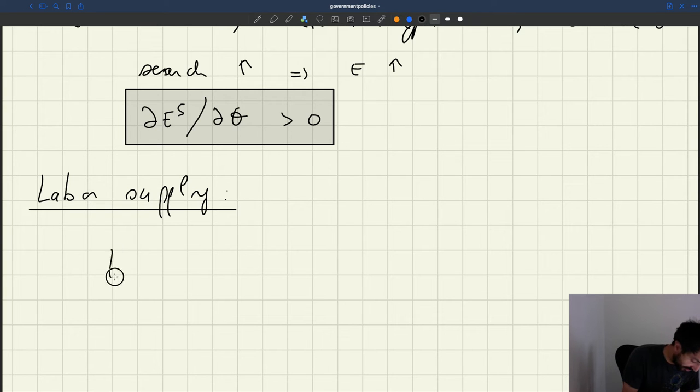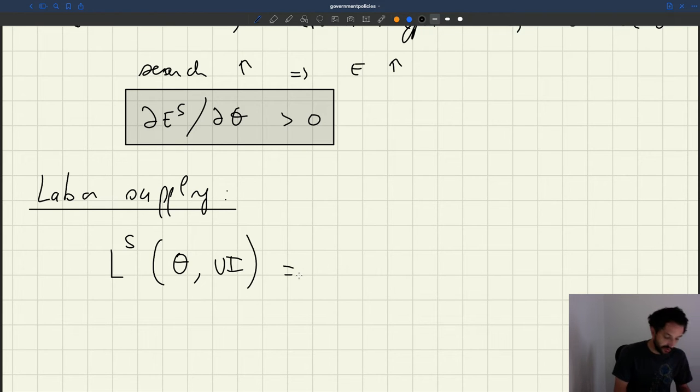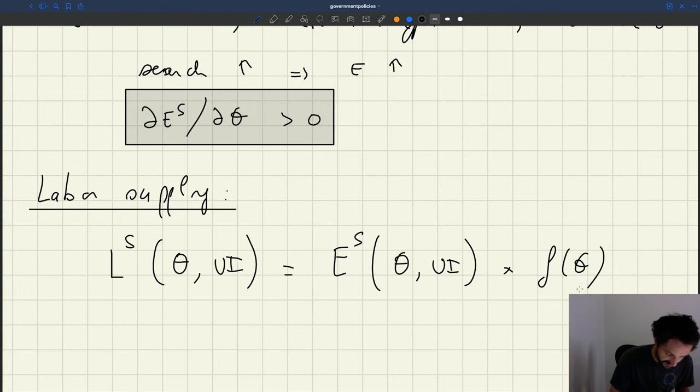So the labor supply here is just going to be LS, and we'll see that labor supply is going to depend on tightness and on UI. Well, it's just going to be effort, but the effort is some optimal effort chosen by the worker, so it's given by the effort supply, which depends on tightness and on UI, times f of theta. And that's our labor supply in that case.